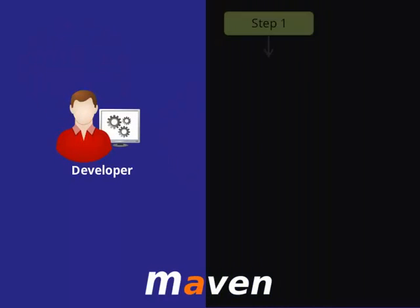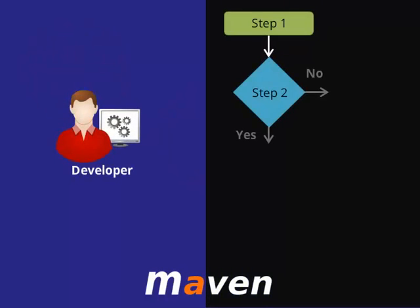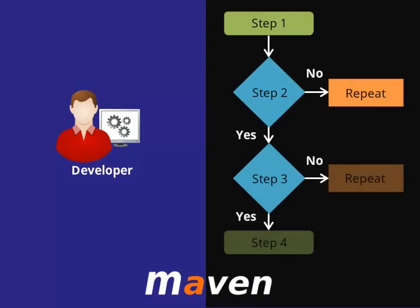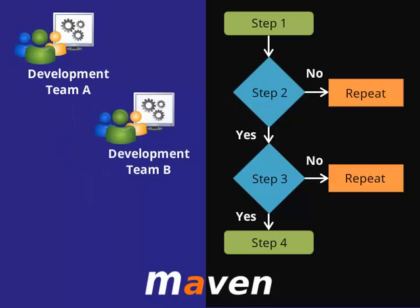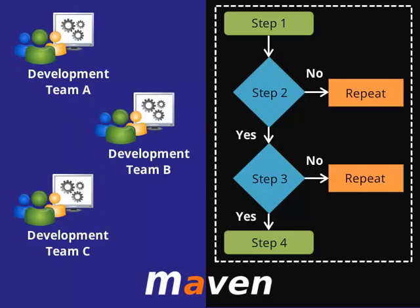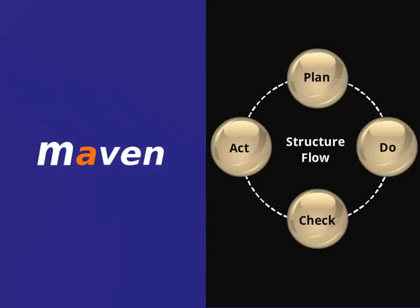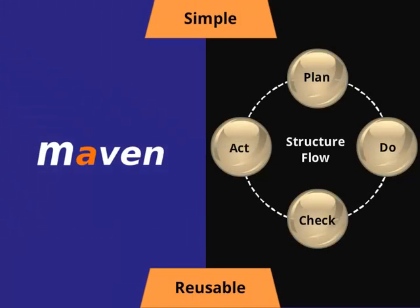Maven is mainly useful when the developers need to follow a certain structure in order to achieve similar project outputs. In case of multiple development teams environment, Maven can set up the way to work as per standards in a very short time, as most of the project setups are simple and reusable.